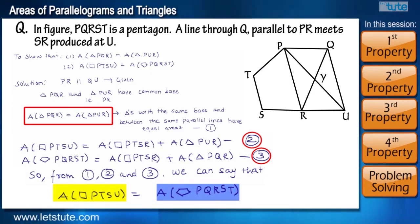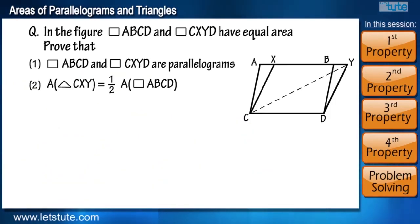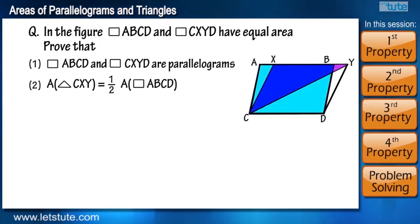Wasn't this also simple? Let me leave you all with another question so that you can polish your skills and strengthen your math powers. In the figure quadrilateral ABCD and CXYD have equal areas. You have to prove that both the quadrilaterals are parallelograms and show that area of triangle CXY is equal to half area of quadrilateral ABCD.